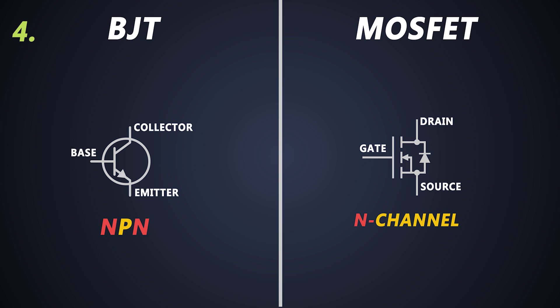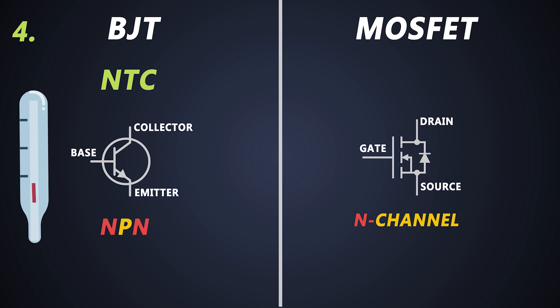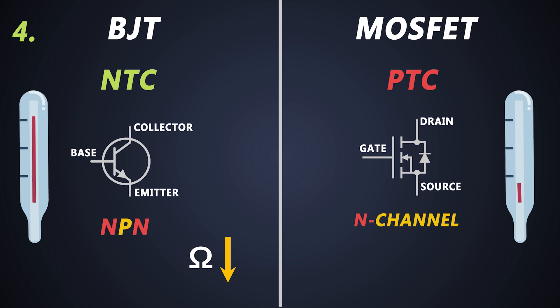BJT is a Negative Temperature Coefficient device, meaning when the junction temperature of the BJT increases, its electrical resistance decreases. But MOSFET is a Positive Temperature Coefficient device, meaning when the junction temperature of the MOSFET increases, its resistance — RDS(ON) — also increases.